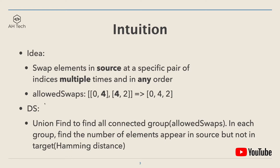Say the allowSwaps array contains [0, 4] and [4, 2]. That means we can swap the element at index zero to index four, or the element at index four to index two. We can think of this as one connected group — zero, four, two — where each element at those indices can be freely swapped with each other. The key insight is these two pairs are connected because they share the common element four. The data structure we can use is a Union-Find to identify all connected groups in the allowSwaps array.